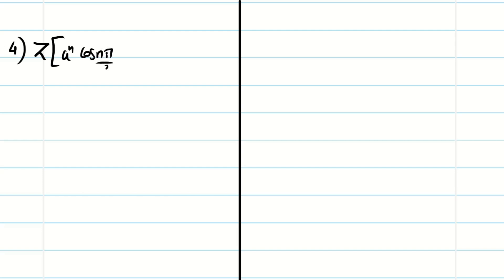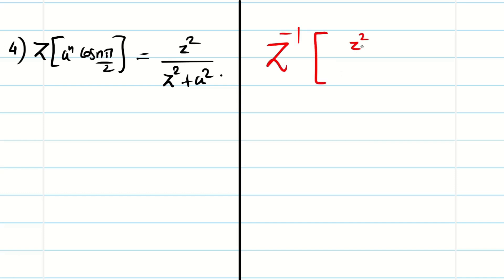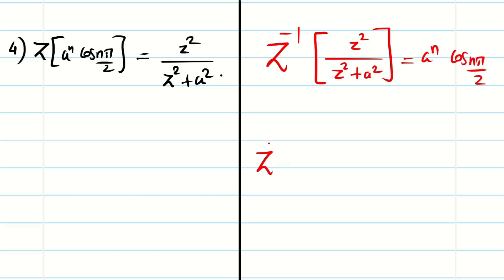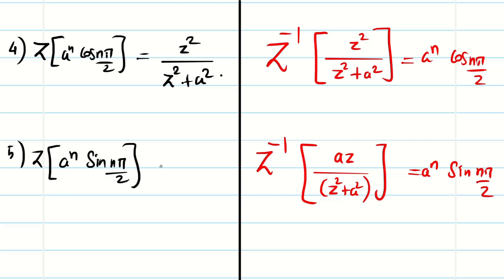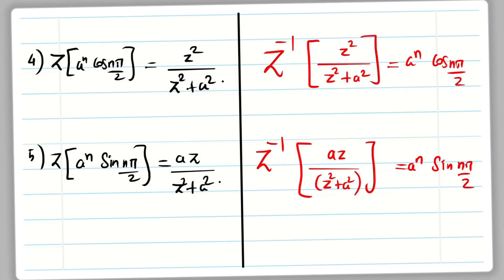In the similar way, z of a power n cos(nπ/2) is z squared divided by z squared plus a squared. For the inverse, z inverse of z squared divided by z squared plus a squared equals a power n cos(nπ/2). Similarly, for sin(nπ/2), the formula is a·z divided by z squared plus a squared. We have to remember all these formulas from z-transform and use them in the inverse z-transform.